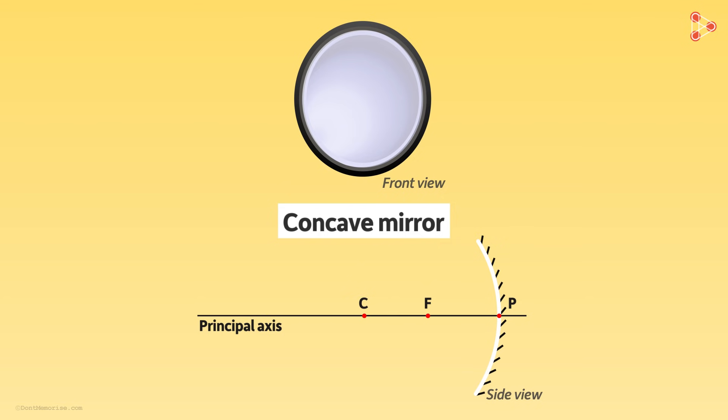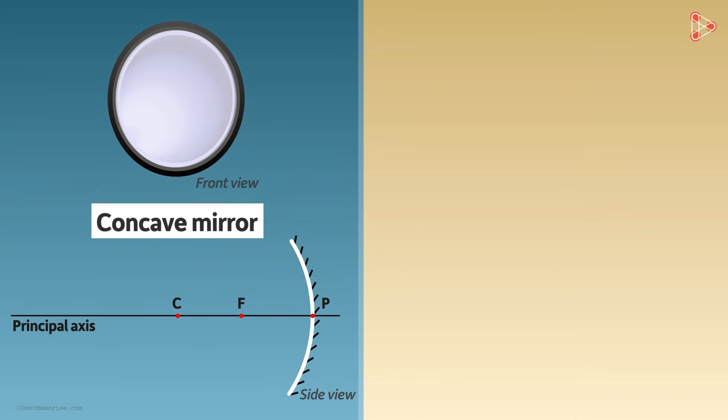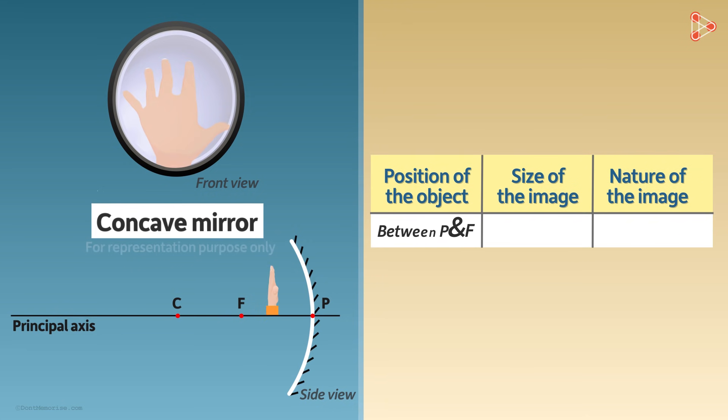Assume that initially, the object is kept close to the mirror. I will make a table on the right with three columns telling us where the object is kept, the size of the image formed, and the nature of the image, whether the image is virtual or real. So initially the position of the object is between F and P.